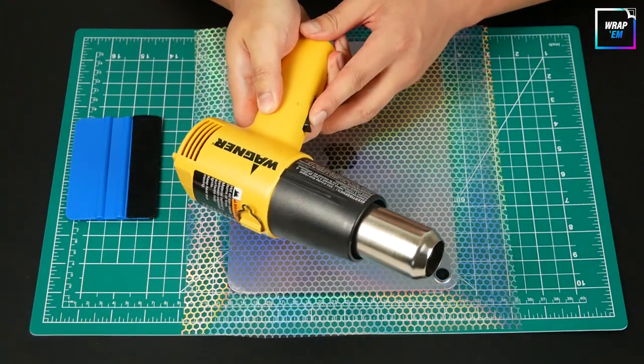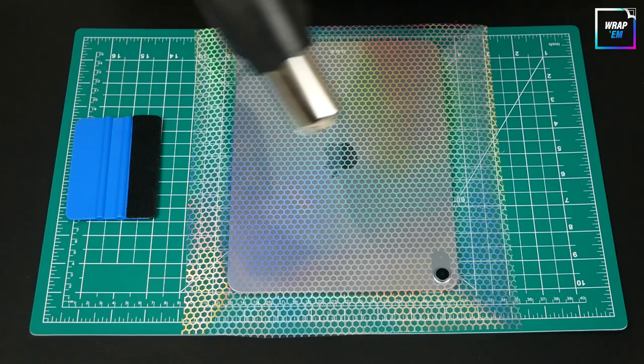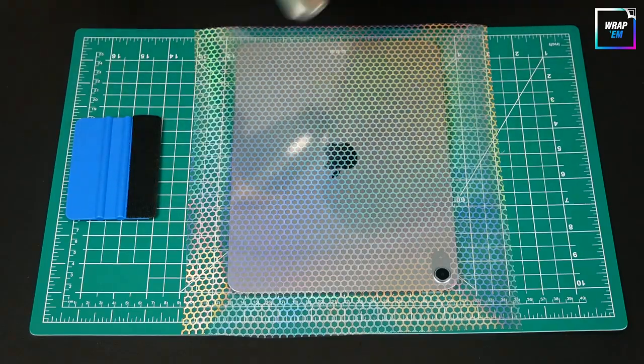Once the vinyl is perfectly laid on the iPad, grab a heat gun and heat the surface as you squeegee to make the vinyl adhere better.